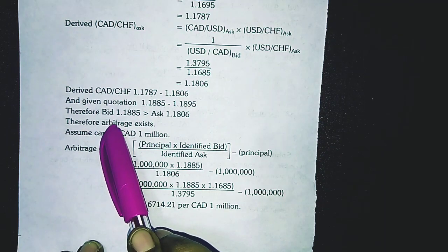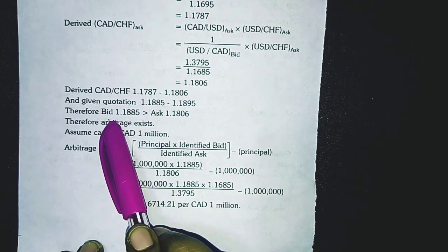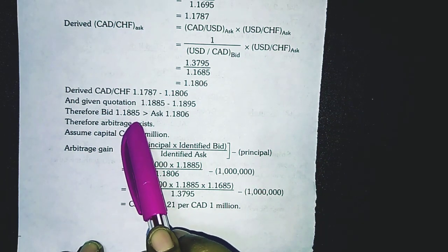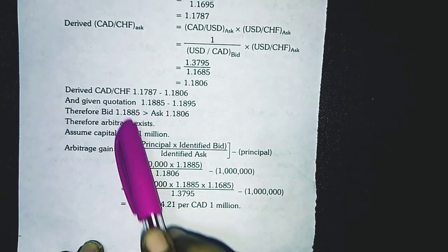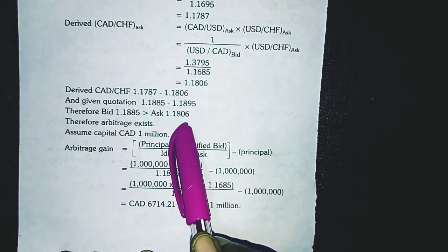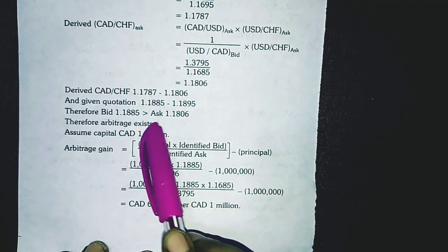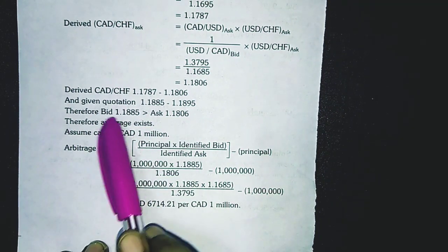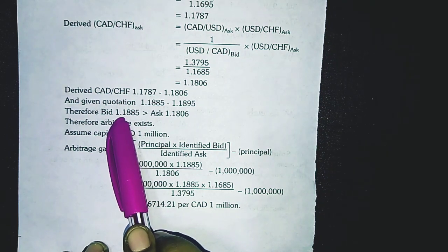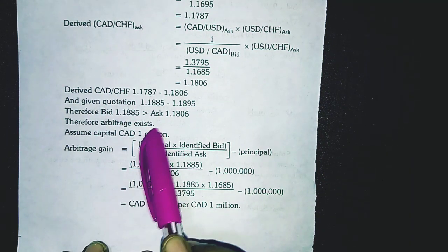The identified bid of 1.1885 is greater than the identified ask of 1.1806. Therefore we can purchase the currency at the lower rate and sell it at the higher rate — so arbitrage exists.